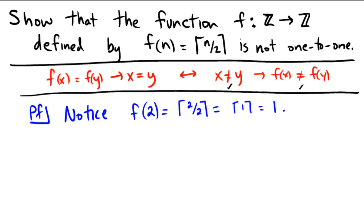Now let's take another value. Let's take f of some other number that we're going to hope is going to equal 1. So let's take something like f of 1.5. f of 1.5 is the ceiling of 1.5 over 2. What is 1.5 over 2? 1.5 divided by 2 would be the ceiling of 0.75.